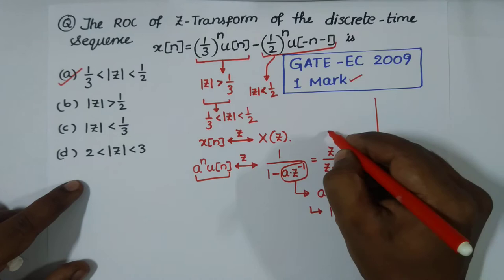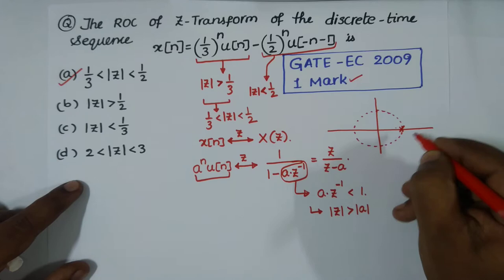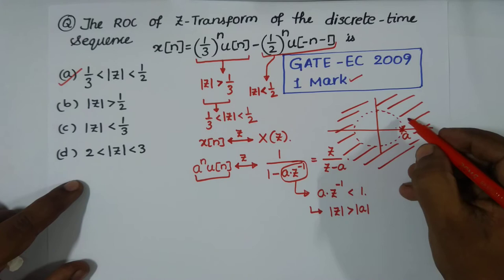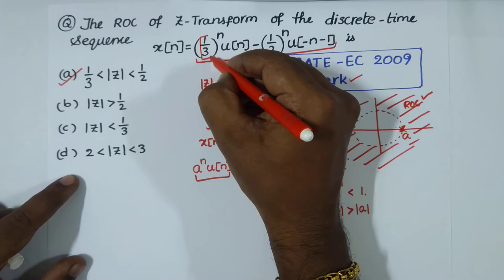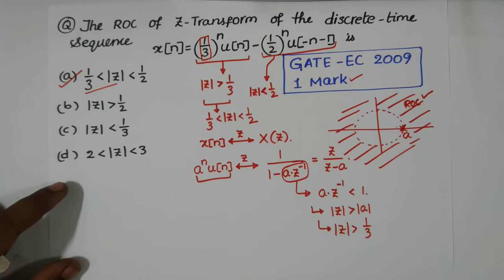In the complex Z-plane, if you have a pole at z = a, the ROC is the region exterior to that pole, i.e., |z| > |a|. The ROC is not defined in the interior zone. In our problem, in place of a we have 1/3, so the ROC for the causal term is |z| > 1/3.